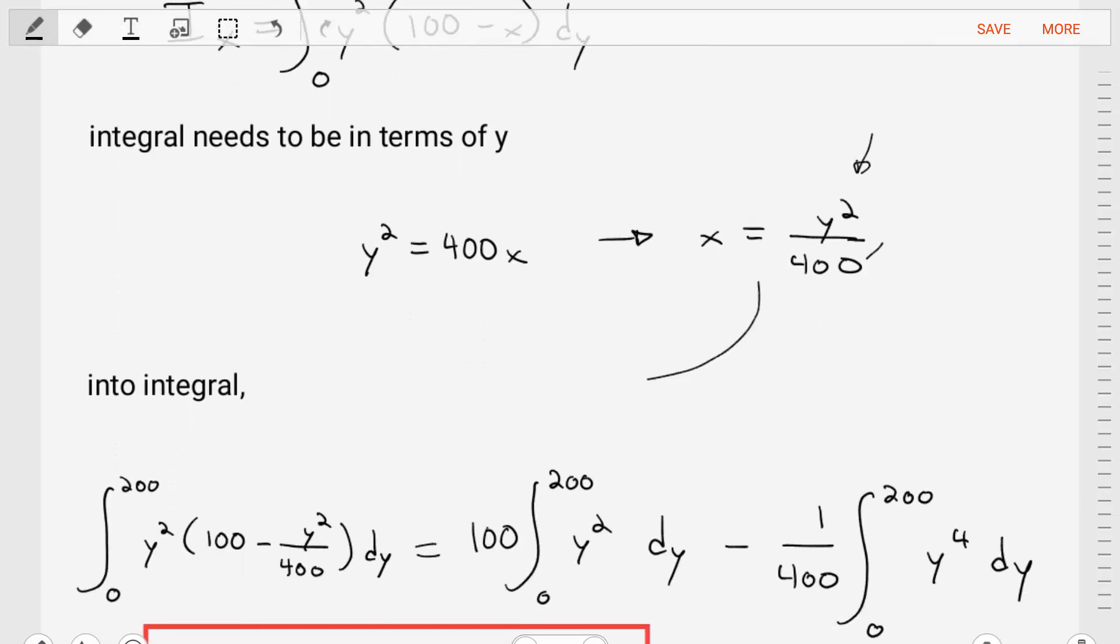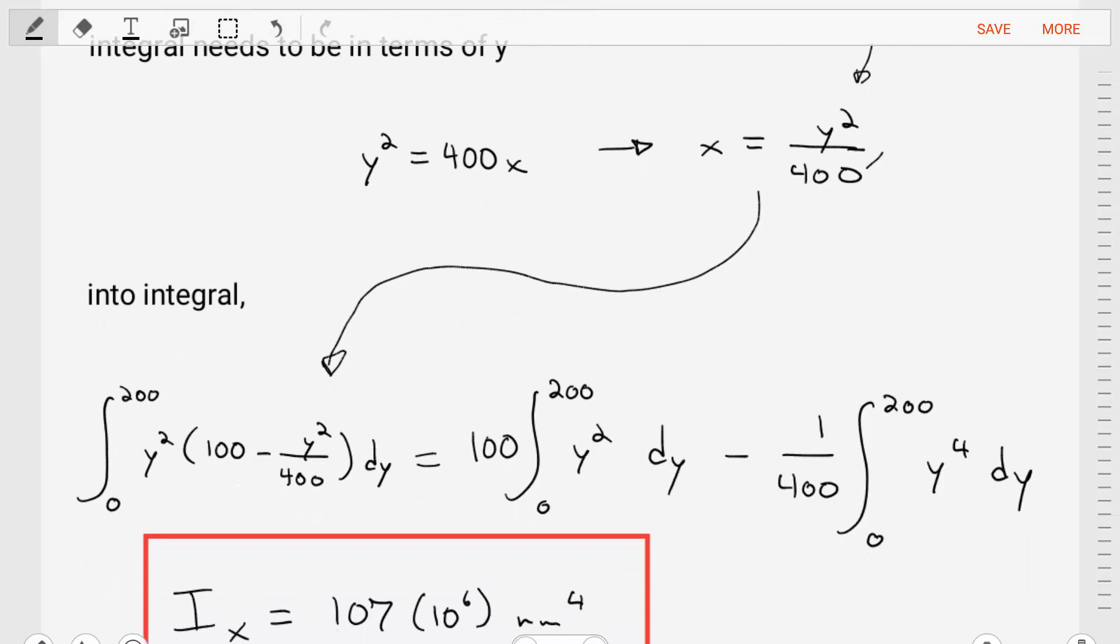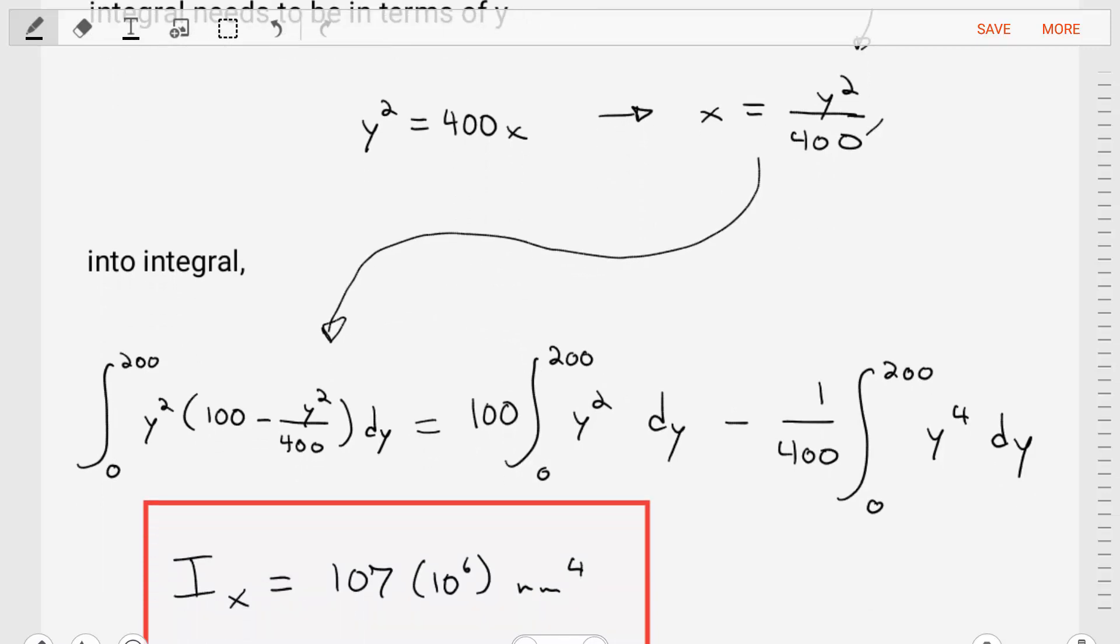We'll then plug this into our equation, and then we can start to perform the integration. Now we're going to do definite integration here, so we're going to integrate over the y height of our area, from 0 to 200. Then we're going to break this out into two pieces, the first term minus the second term, and then integrate.